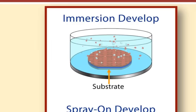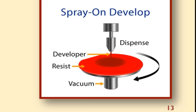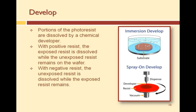The develop process leaves a visible pattern within the resist, as you can see in the top picture. Develop is a wet process. Wafers are either immersed in the developer or the developer is sprayed or puddled on. This graphic illustrates two types of develop: immersion and spray-on develop.